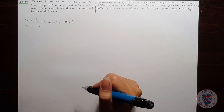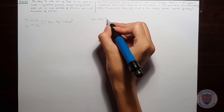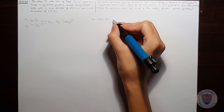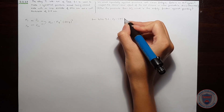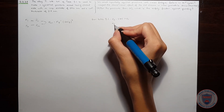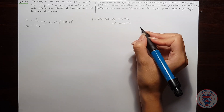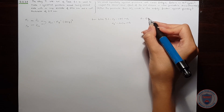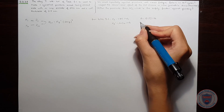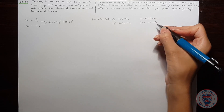Before solving, let's write the material properties from table 9.1. The yield strength is equal to 1185 MPa. Sigma F prime is equal to 2030 MPa. A is equal to 1189 MPa, and B is equal to minus 0.104.